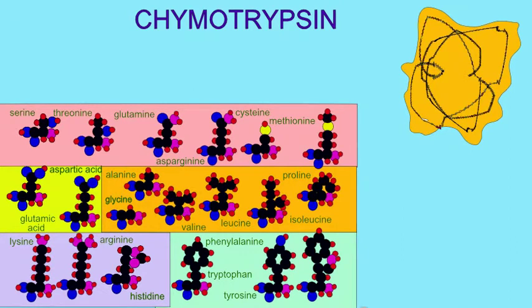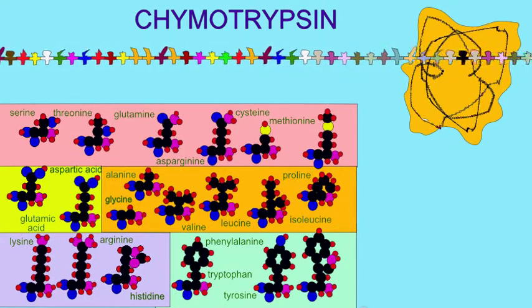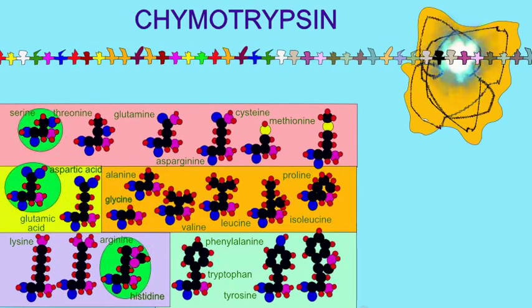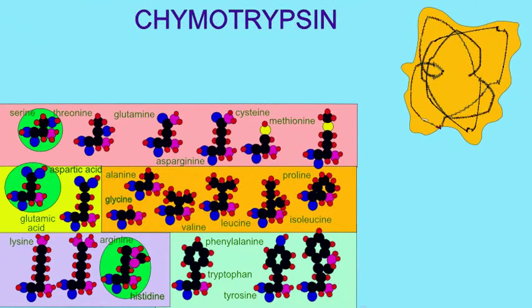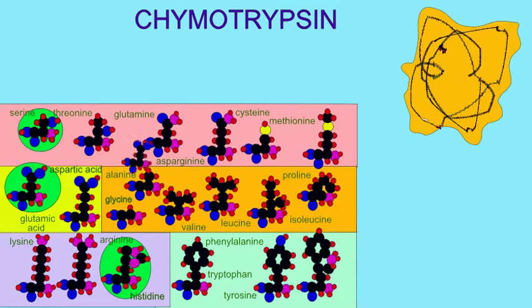The gene family of serine proteases, which includes trypsin, also includes a similar enzyme known as chymotrypsin. Chymotrypsin is also a protease that possesses an active site composed of histidine at residue 57, aspartate at residue 102, and serine at residue 195.